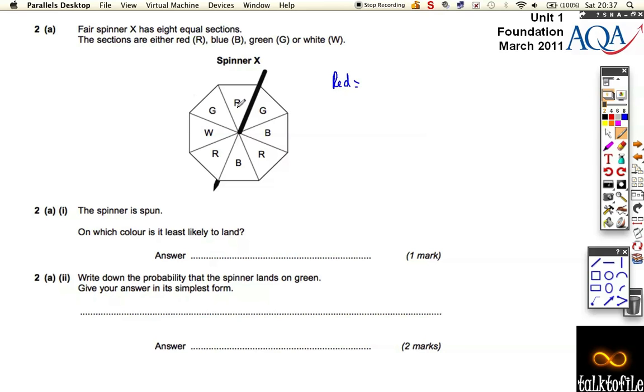How many reds are there? 1, 2, 3 reds. 1, 2, 2 blues. How many greens are there? There's 1, 2 greens